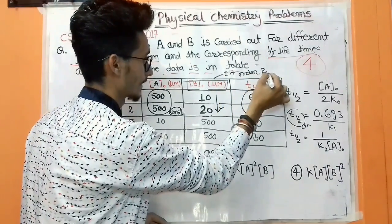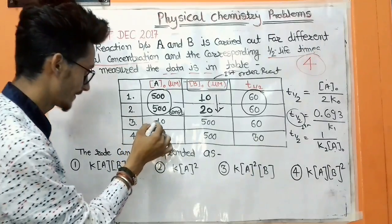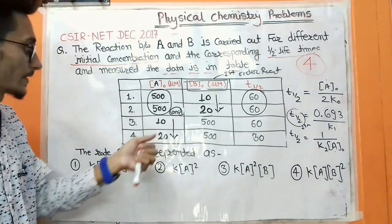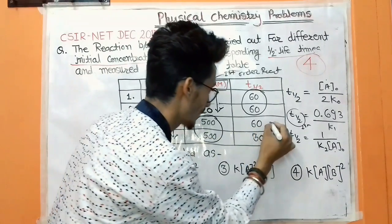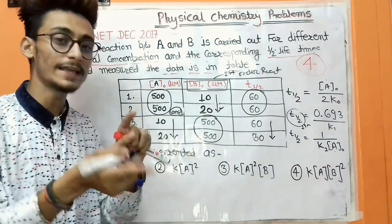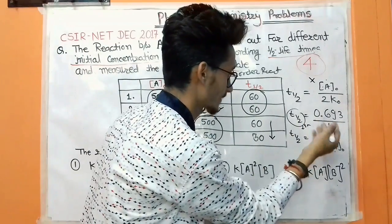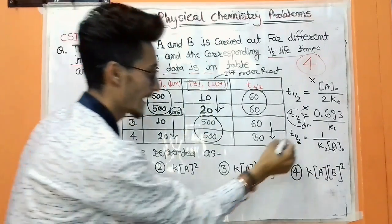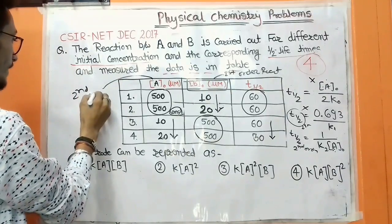Now for reactant A: the concentrations increase from 10 to 20, and the half-life also changes — it decreases as concentration increases. This means concentration and half-life are inversely proportional. That matches the second-order half-life formula, where half-life = 1 / (k₂[A]₀). So A is a second-order reaction.